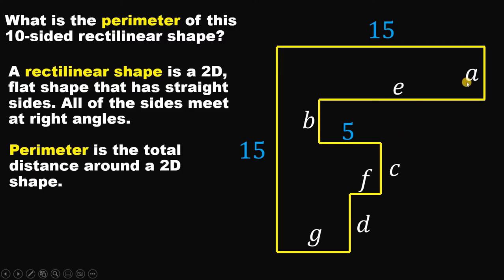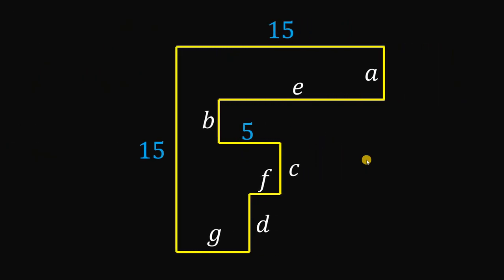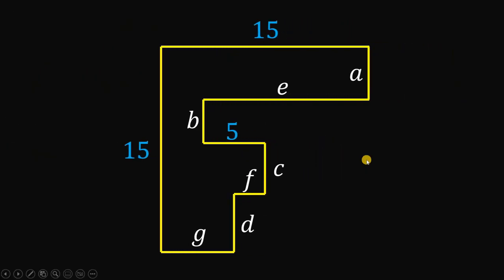We don't have a value for A, B, C, D, and E, but our goal is to find the perimeter. So let's focus on this shape. In this question, we don't need to find the exact value of those variables.